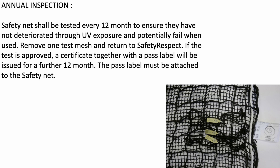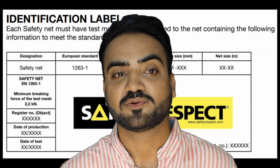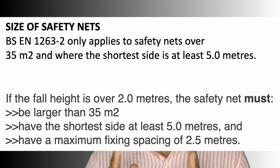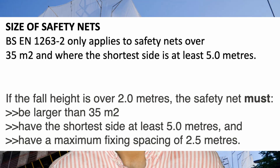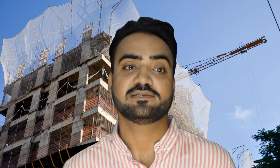Annual inspection: per EN 1263, safety nets shall be tested every 12 months to ensure they have not deteriorated through UV exposure and potential failure when used. A pass label must be attached to the safety net. Regarding sizes, BS EN 1263 Part 2 only applies to safety nets over 35 square meters in size and where the shorter side is at least 5 meters.